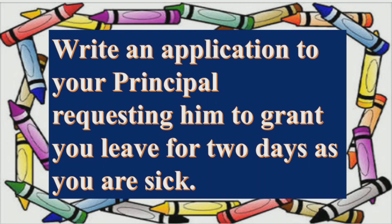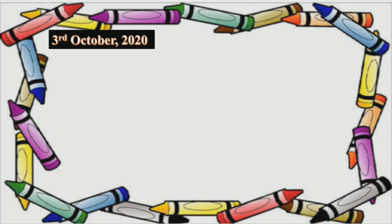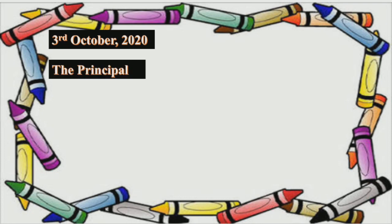First of all, we write down the date. For example, if you fell sick on 3rd October, you first write the date at the top — just like today is 3rd October, so I will write the date: 3rd October 2020. Then, what do you write next? The principal — because the application is to the principal.